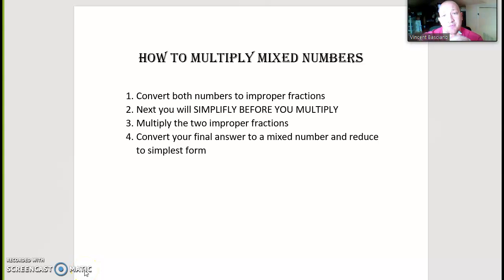Again, here's our order, right? What we did was we converted both numbers to improper fractions, then we simplified before we multiplied by dividing thirty-two and two by two, then we multiplied the two improper fractions, and then we converted our final answers to a mixed number and reduced to simplest form. It was already in simplest form, we didn't have to reduce anymore, okay?